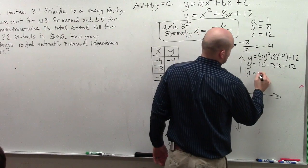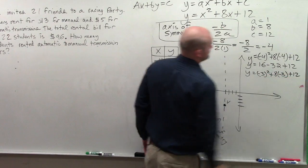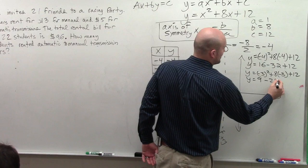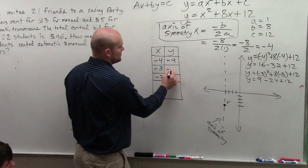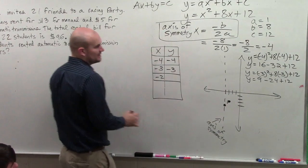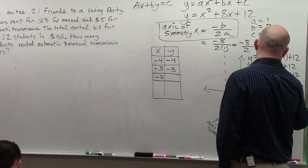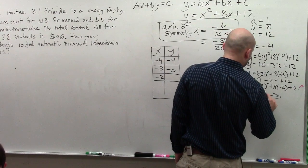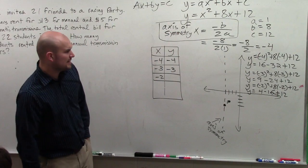So, now, I'll do negative 3. When doing that, I get y equals 9 minus 24 plus 12. That becomes negative 15 plus 12, which is negative 3. So, that becomes negative 3, negative 3. And then, my last point is negative 2. And when I get to that, I get 0.